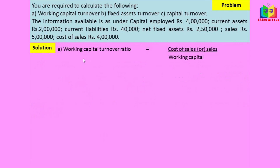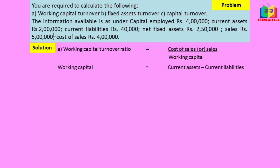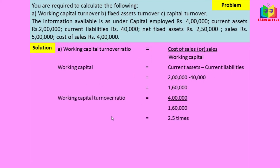First, working capital turnover ratio: formula is cost of sales divided by working capital. Cost of sales is given as 4 lakh. Working capital equals current assets minus current liabilities: 2 lakh minus 40,000 equals 1 lakh 60,000. So working capital turnover ratio is 4 lakh divided by 1 lakh 60,000, which equals 2.5 times.